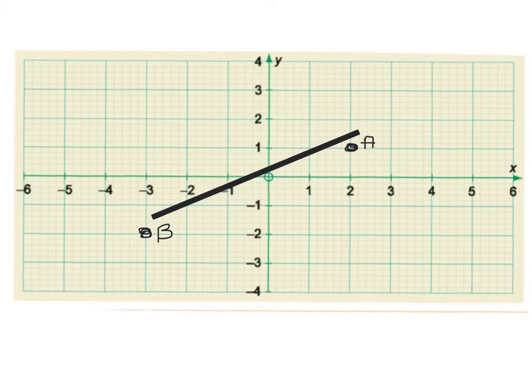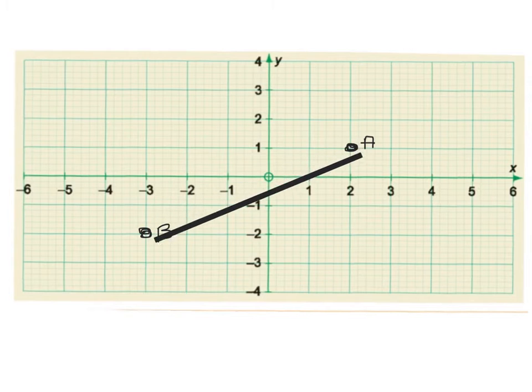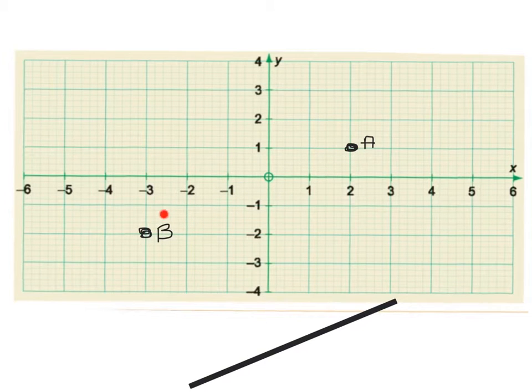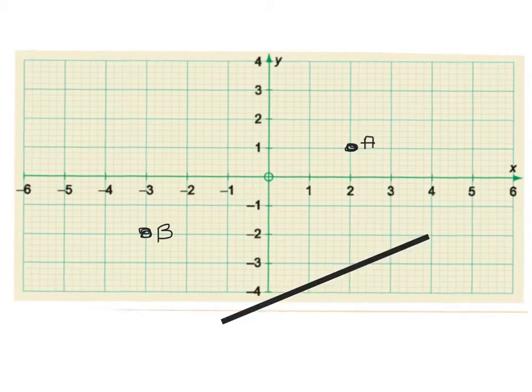Okay, so here we have the coordinate plane. I have my y-axis and my x-axis, and I've also got point B, which is (-3, -2), and point A, which is (2, 1), and I'm going to form the line AB.